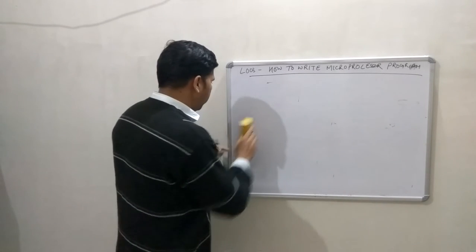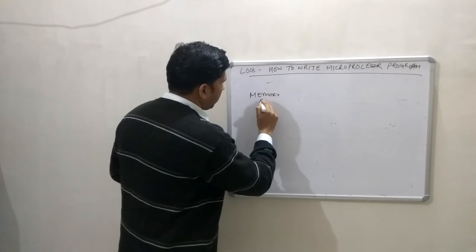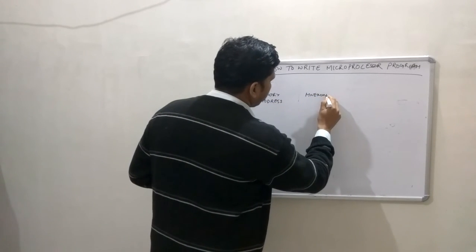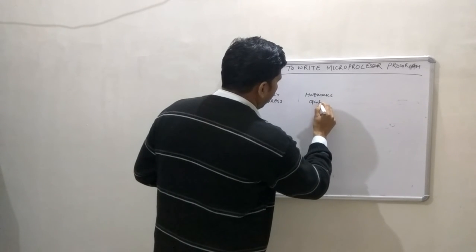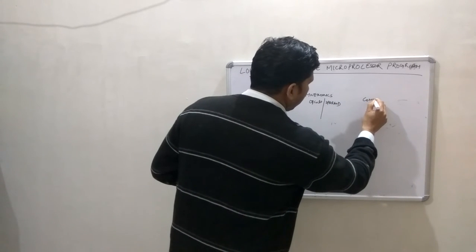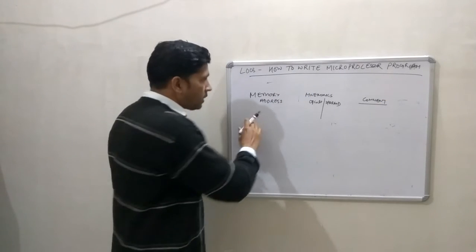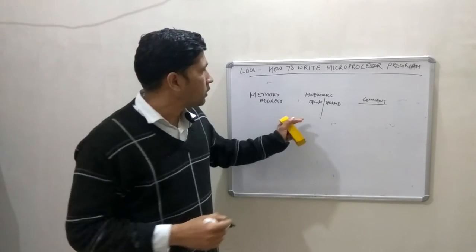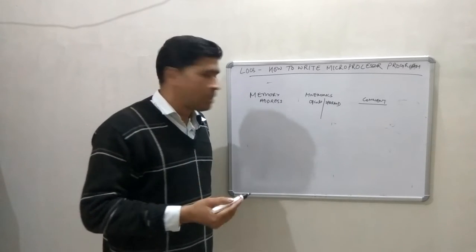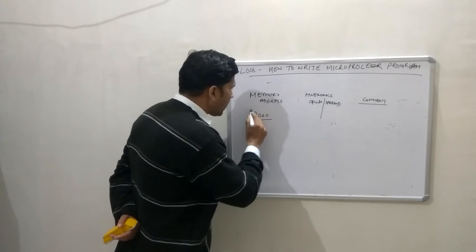Now, how can you write a standard program in a microprocessor? A standard program has three parts. First is the memory address. Second is the mnemonics, which is the actual instruction code divided into opcode and operand. Third is the comment — in the comment you describe what a particular instruction is doing and why it is used. I am taking the example of addition of two numbers using the accumulator, which I have already discussed in my second lecture. Suppose I am writing 2000 as the starting memory address.